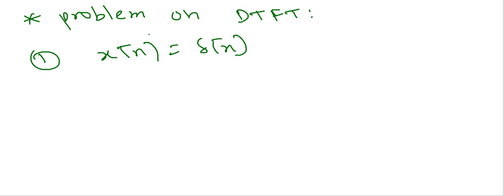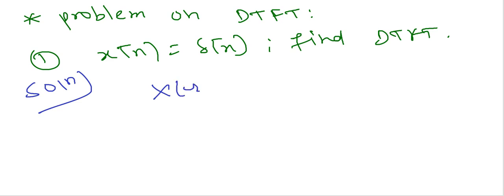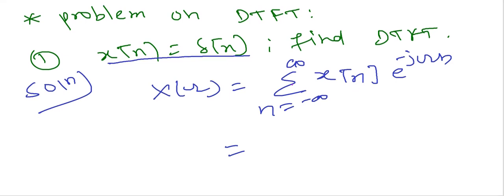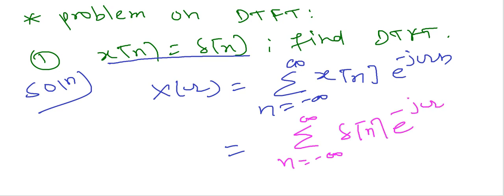In this video we will solve a few problems on DTFT. Consider the first problem where x(n) = δ(n) and we have to find its DTFT. We know that X(ω) is equal to the summation from n = -∞ to +∞ of x(n)·e^(-jωn). Substituting x(n) = δ(n), we get the summation of δ(n)·e^(-jωn).